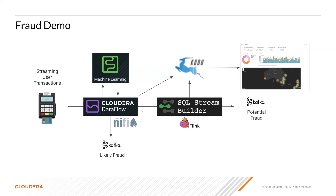NiFi will enrich the original message — the original flow file — with the result of the machine learning model score, and then route that message in different ways. If the scoring is very high, indicating the transaction is likely fraud, it will immediately route that to a Kafka topic where downstream applications can take action — for example, send a notification to customer service to contact the user immediately. It will also store the data in Kudu for additional analytics using Impala.